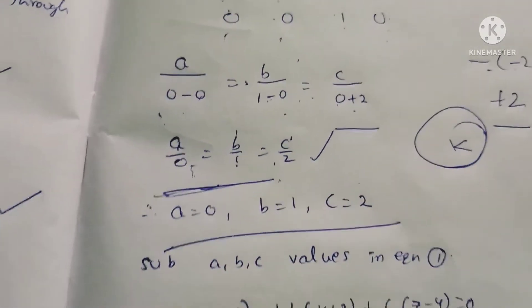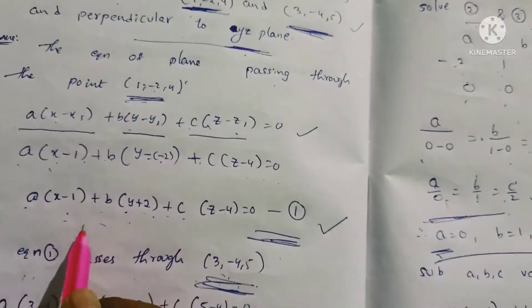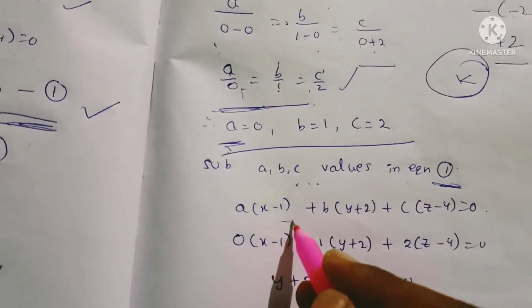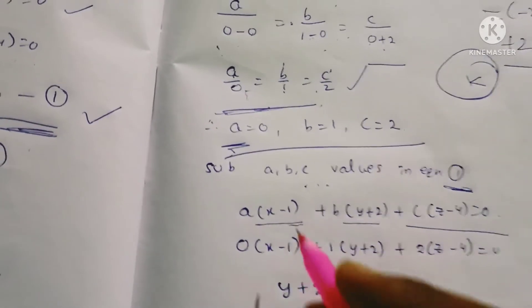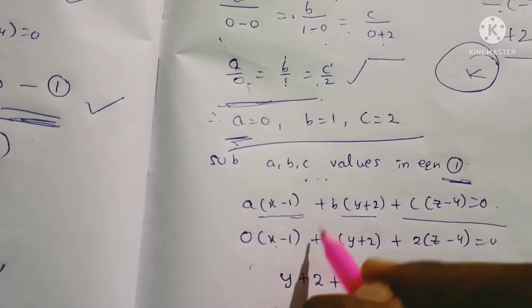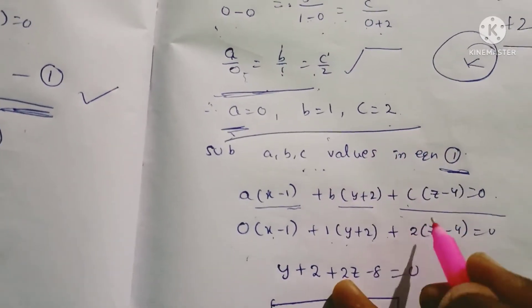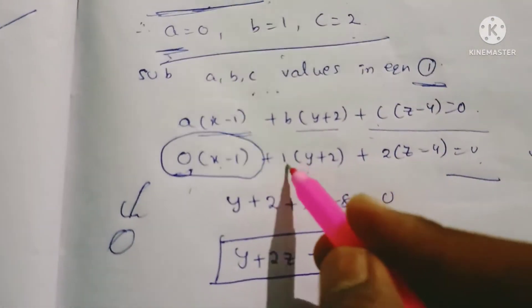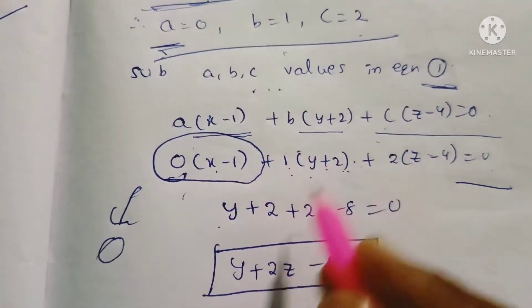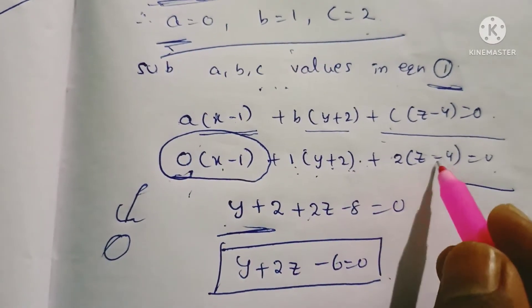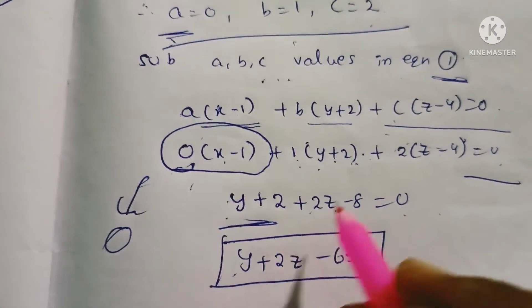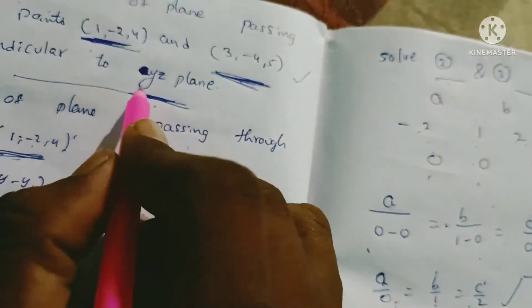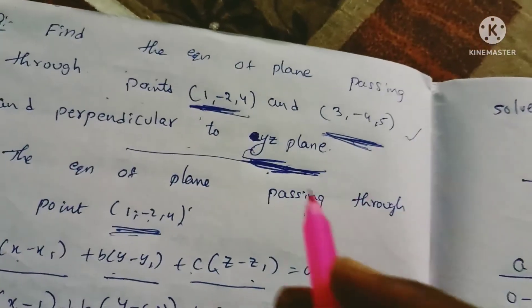Now substituting A, B, C values into equation 1: A(x - 1) + B(y + 2) + C(z - 4) = 0. With A = 0, B = 1, C = 2: 0·(x - 1) + 1·(y + 2) + 2·(z - 4) = 0. Simplifying: y + 2 + 2z - 8 = 0, giving y + 2z - 6 = 0. That is the final answer.